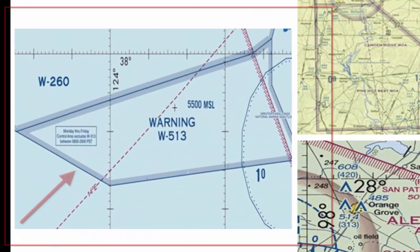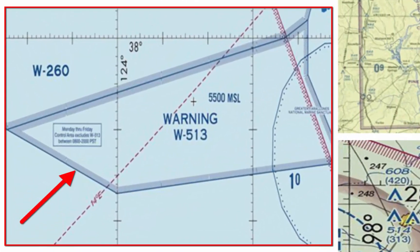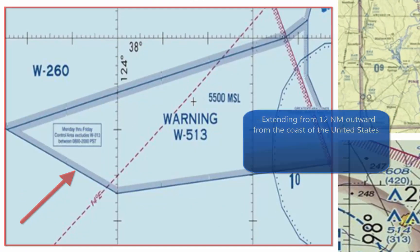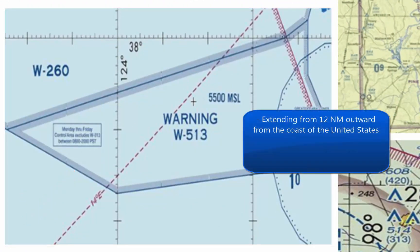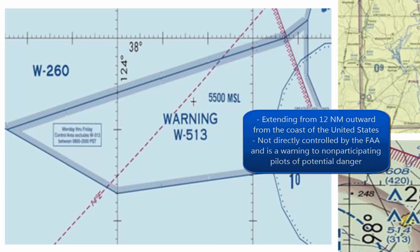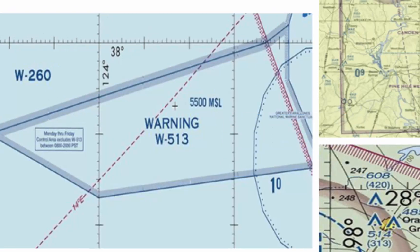A warning area is airspace of defined dimensions extending from 12 nautical miles outward from the coast of the United States, containing activity that may be hazardous to non-participating aircraft. This area is not directly controlled by the FAA and is a warning to non-participating pilots of potential danger.